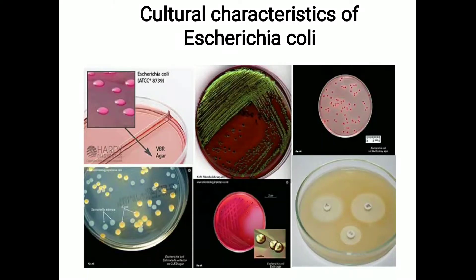Today we are going to discuss the cultural characteristics of Escherichia coli, commonly known as E. coli. They are a large, varied group of bacteria found in the environment, foods, and lower intestines of humans and animals. Most strains are harmless, but some strains cause food poisoning in humans.